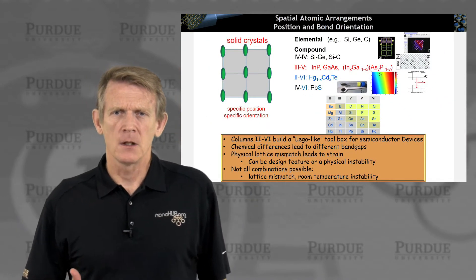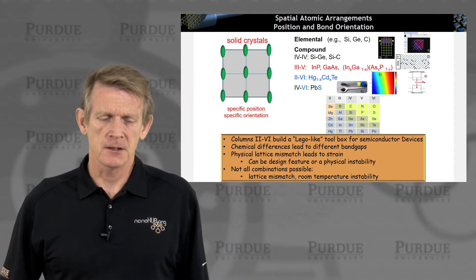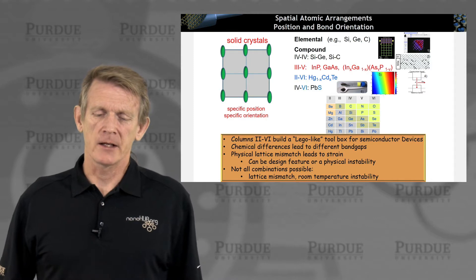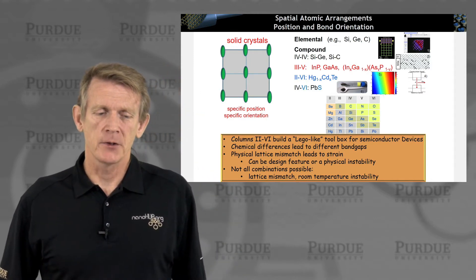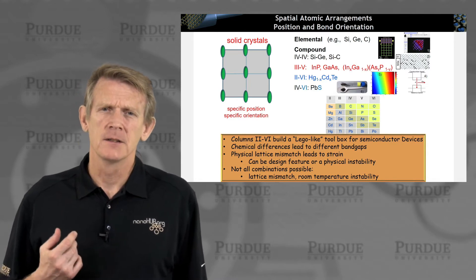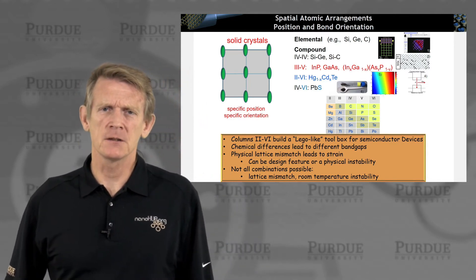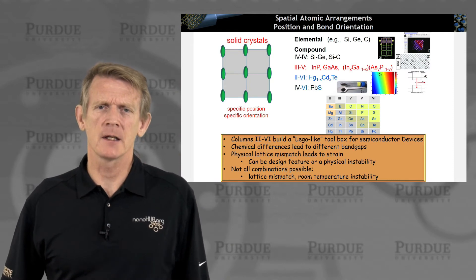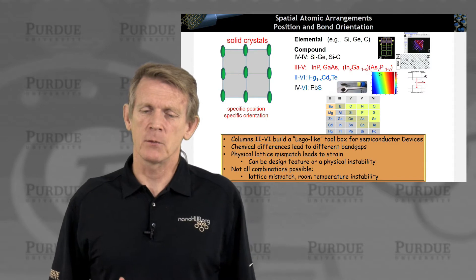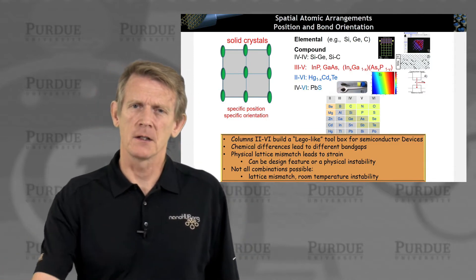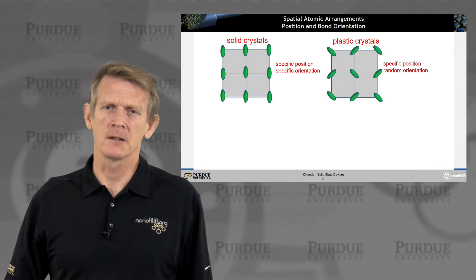All right, so all of these semiconductors that I just mentioned in the previous section build this Lego-like toolbox, and they're solid-state materials, meaning they have stable solid bonds, specific positions — the atoms don't move around freely — and the bonding has specific orientation. So that's one class of crystal, it's called solid crystal, and this is the solid-state devices that we're typically dealing with.